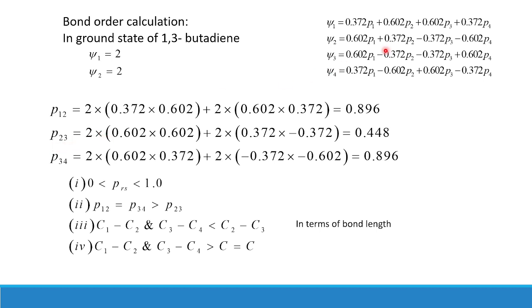Similarly, the bond order P23 is calculated as 2 × (0.602 × 0.602) for ψ1, plus 2 × (0.372 × −0.372) for ψ2. This comes out to be 0.448.